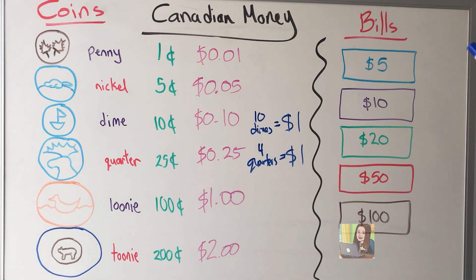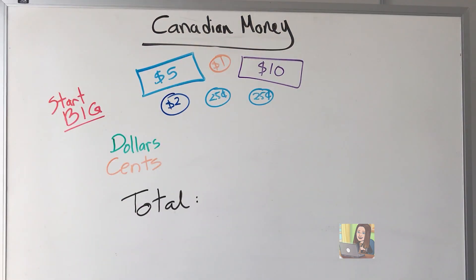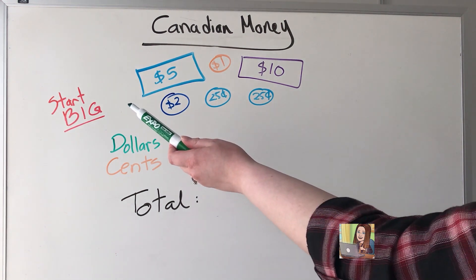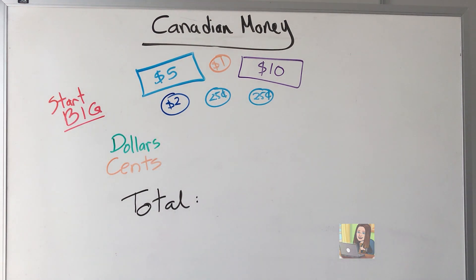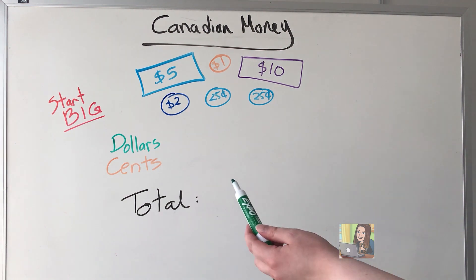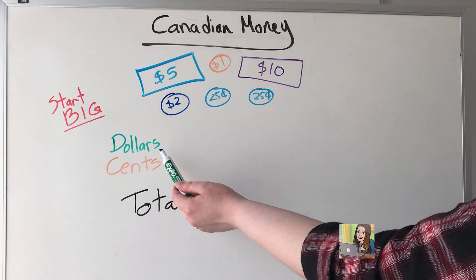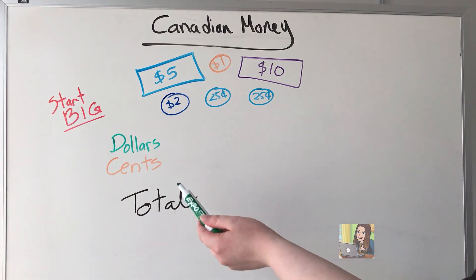We're going to look more closely at those bills when we get to the video about making change. Now we're going to do two examples to review how to count money. One key thing to help us remember is to start with the bigger numbers — get them out of the way first. When we get to the cents, then it gets more complicated. So let's start with the dollars, breaking them into two groups: dollars and cents.